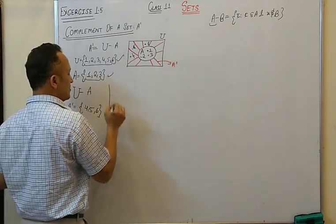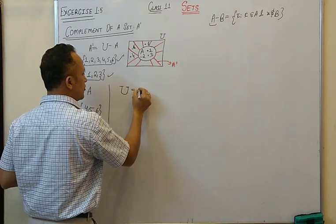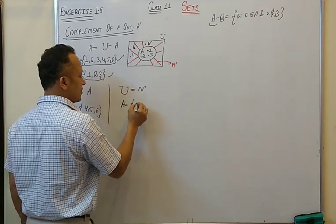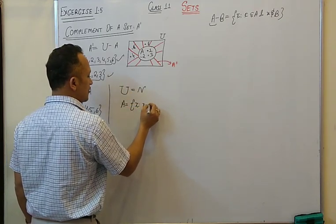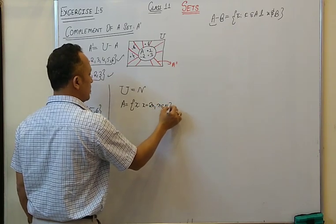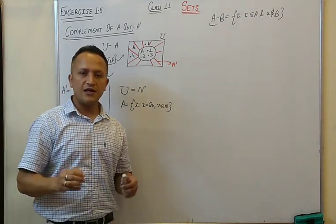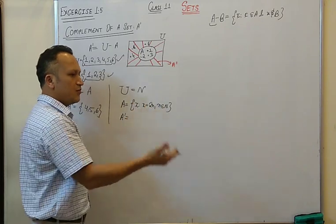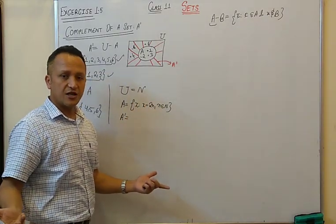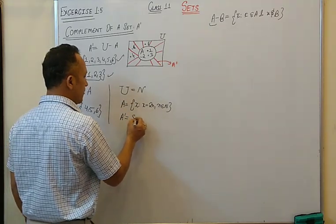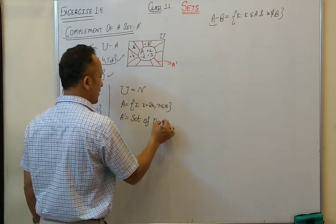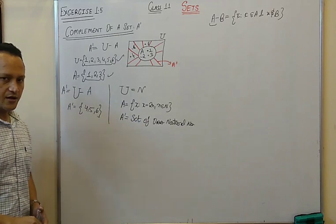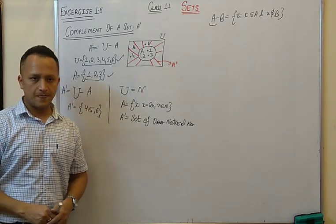For another example, if the universal set is the set of natural numbers and A is the set of even natural numbers, then A complement would be the set of all odd natural numbers. This is about complement of a set.